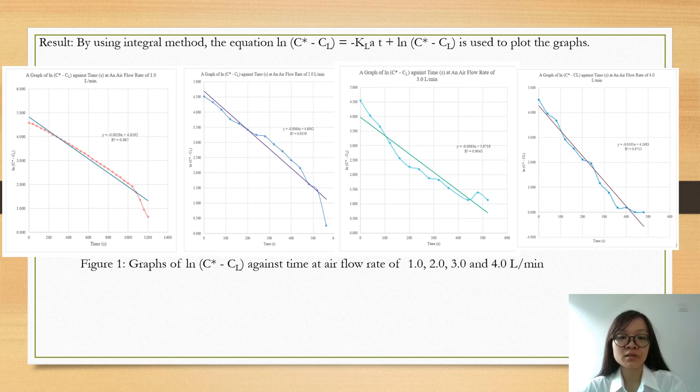By comparing the equation ln(C*-Cl) = -KLA·T + ln(C*-Cl) with the equation y = mx + c, the gradient of slope equals to the negative KLA.